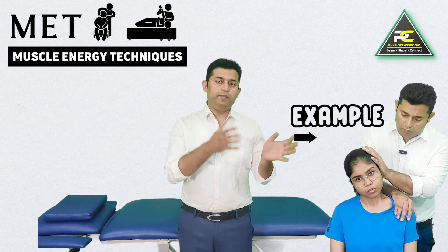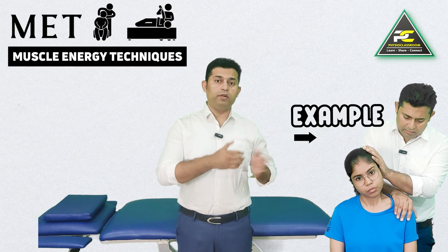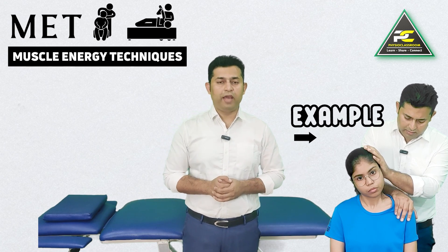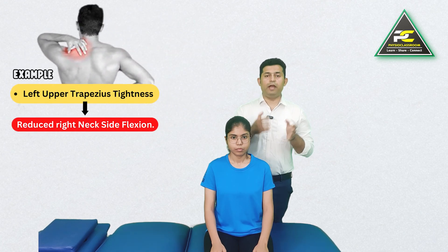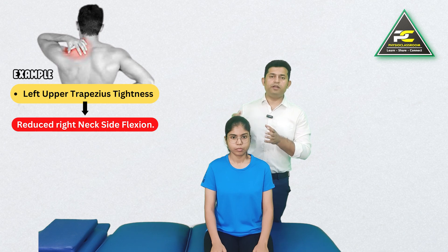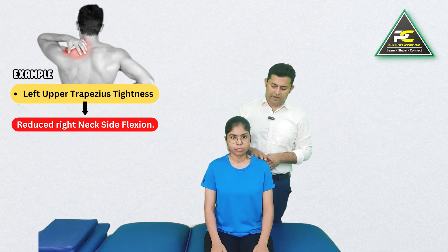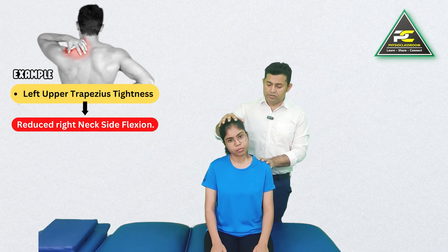In this example, we will demonstrate MET treatment for tight left trapezius. This particular patient, due to tightness in the left upper trapezius, is having a reduction in right side flexion of the head and neck.